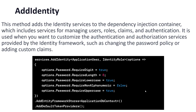First of all, we are talking about the AddIdentity method. This method adds the identity services to the dependency injection container, which includes services for managing users, roles, claims, and authentication. It is used when you want to customize the authentication and authorization services provided by the identity framework, such as changing the password policy or adding custom claims. Here we have a simple example of the AddIdentity method.